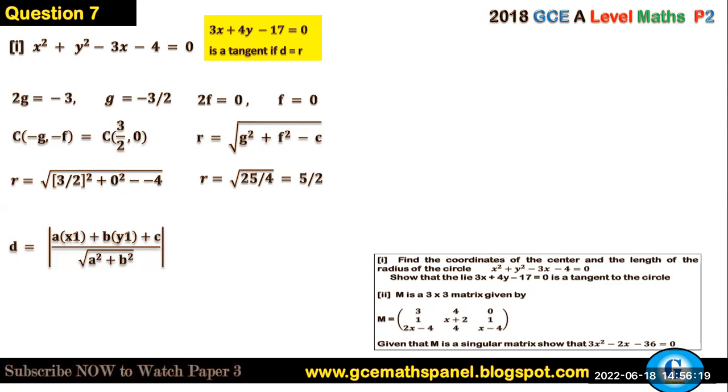That will give us 3 into 3 over 2, where 3 over 2 is the x value of the center, plus 4 into 0, zero is the y value of the center, minus 17, all over the square root of 3 squared plus 4 squared.